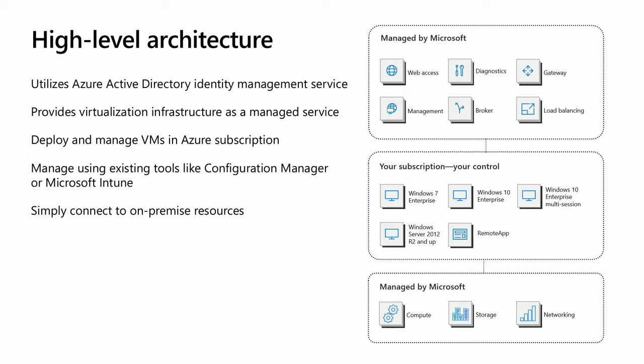The only thing we require you to bring is your own Azure subscription—that's the part in the middle, where the operating systems are deployed. You choose whether to deploy Windows 7, Windows 10 Enterprise, Windows 10 Enterprise multi-session, or Windows Server. You install an agent on one of those VMs; that reaches out to our management plane via the outbound connection. Whenever someone connects, we broker the connection in Azure—so no inbound ports have to be opened—and we can use Azure Active Directory identities, enabling conditional access and MFA.